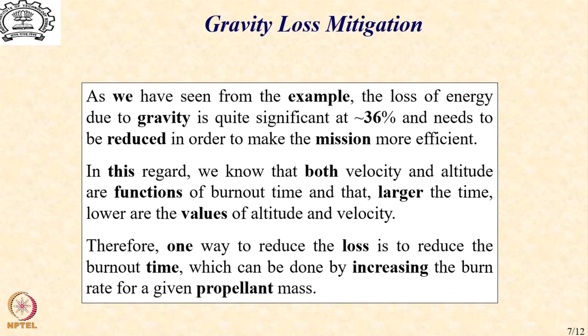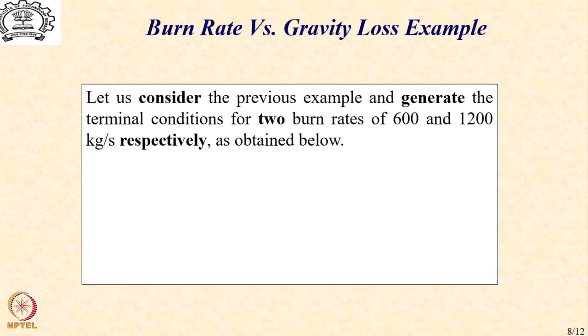This can be done by increasing the burn rate. If you increase the burn rate for a given propellant, then the time it takes to finish the propellant is smaller, and because the time is smaller, the loss due to gravity is likely to be smaller. Let us now consider the same example from the previous lecture and generate the terminal conditions for two different burn rates: 600 kg/s, which we have already seen, and 1200 kg/s — double the previous value.